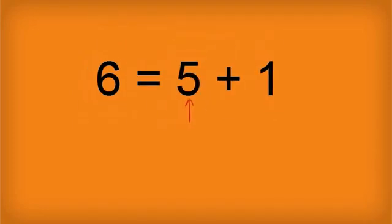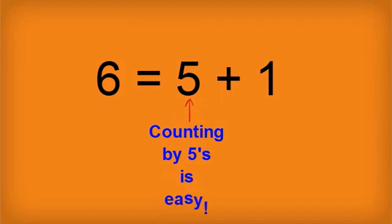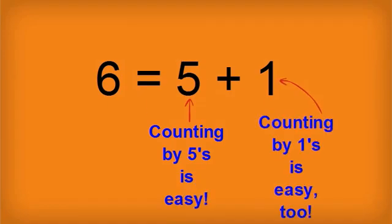When you're multiplying by 6, think of it as multiplying it times 5 plus 1. 6 is 5 plus 1, so what we're really going to do is we're going to count by 5s, and then we're going to go through and count it again by 1s.